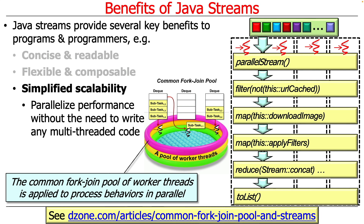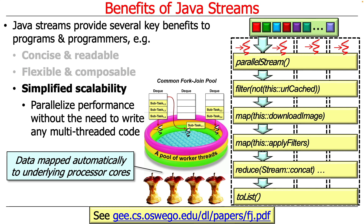The common fork-join pool of worker threads is applied to process all the behaviors in the pipeline in parallel. The way it works is that each thread does all the things in the pipeline of intermediate and terminal operations — we don't do it layer by layer, we do it top to bottom. Everything runs in the common fork-join pool, which maps down to the underlying processor cores using all kinds of clever optimization techniques. In fact, if you look carefully at the solution, you'll see it uses the managed blocker stuff, just like we're doing in our programming assignment.